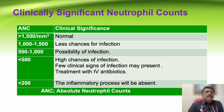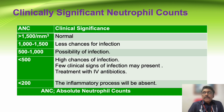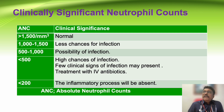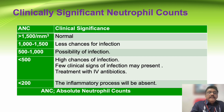With counts less than 500, there is a high chance of infection and few clinical signs may be present; patients should be treated with IV antibiotics. Below 200, the inflammatory process is absent — this is a major problem in neutropenic patients. Normally, infection produces fever, lymphadenopathy, and hepatosplenomegaly. But when neutrophil counts are absolutely zero or very low, there is no chance for inflammation. Infection is present but the body cannot mount a response because there are no inflammatory cells.